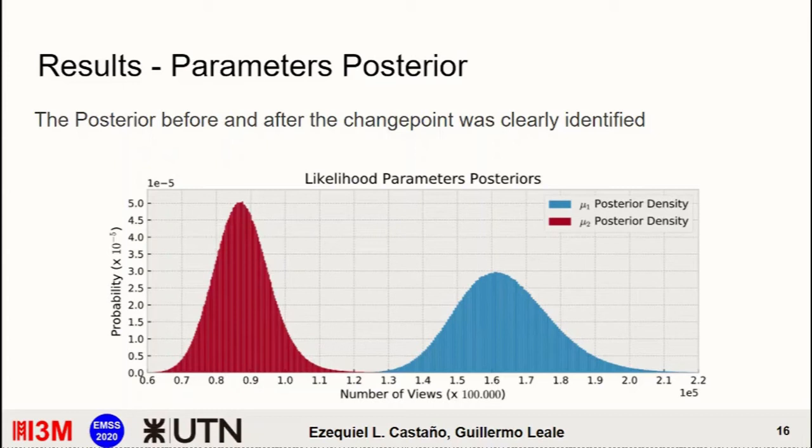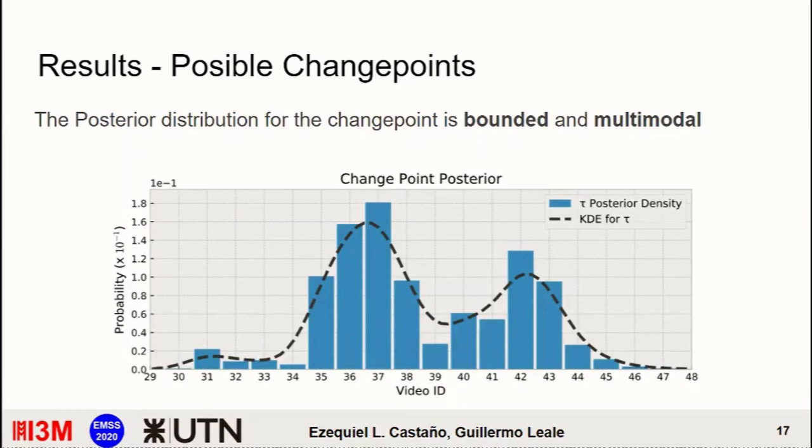If we go to the tau parameter, so the change point, the posterior distribution exhibits some interesting characteristics. Namely, the first, so the prior we chose was uniformly distributed from 1 to 62, the number of total points. And here, the posterior is bounded between 29 and 48. So we reduce the range of the distribution. We get a region, we can call that a transition region, where if there is a change point, this change point should lie in this region. Another interesting characteristic, which is actually not expected at all, is the multimodality. Because we have two particular modes here in 37 and 42, which could represent several things. Either two different change points or a transition region where all points are equally important for the transition itself. But it is interesting to ask exactly what would happen here.